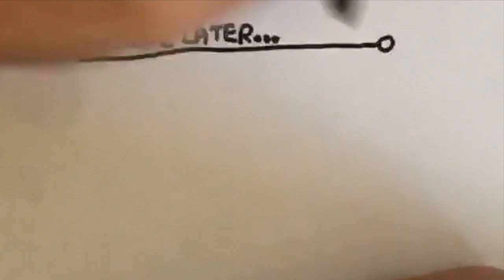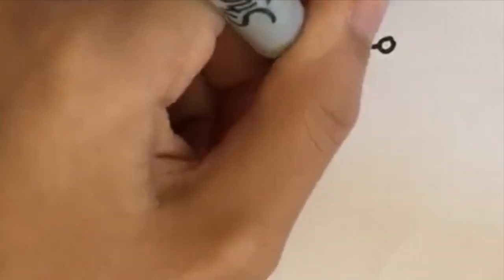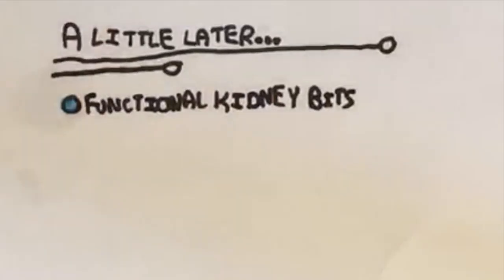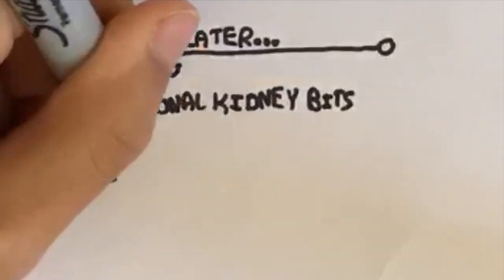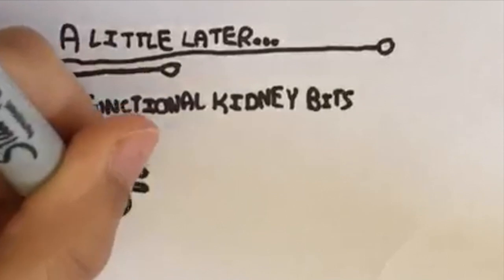After a few months, something absolutely extraordinary happened. This small collection of cells and gel had developed into a structure that was functional. It was now a series of small units of the kidney, known as nephrons.